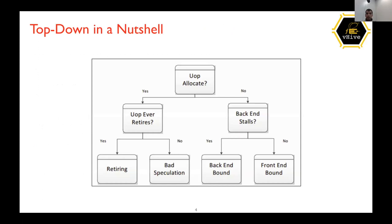Let's see how Top-Down looks in a nutshell. The CPU is often divided into two parts: the front end, which is responsible for instruction fetching and decoding, and the back end, which takes care of instruction scheduling, execution, and eventually firing of instructions. Modern CPUs can issue, for instance, four micro-operations per clock cycle, and they can retire the same number. With new architectures this number rises to five. The goal of the CPU is to populate all those slots in each clock cycle.